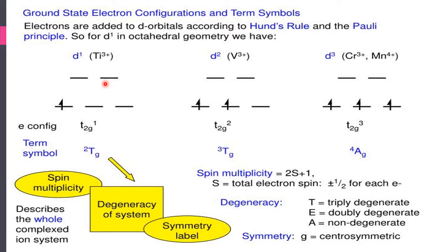For the dn system from d1 to d9: for d1 to d3 and d8 to d10, whether the ligand field is stronger or weaker makes no difference in the filling of electrons. However, for d4 to d7, the ligand field strength does make a difference. For the d1 system — for example, titanium 3+ — the first electron goes into the t2g set, which has lower energy, giving a t2g¹ configuration.